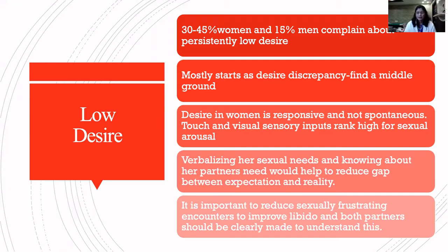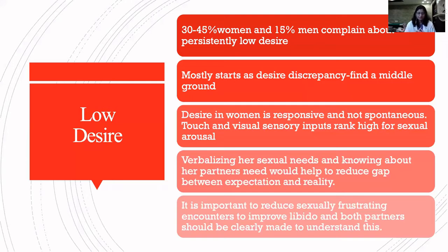The newer circular models have a very important component of previous sexual exposure. If your previous sexual encounter was a happy encounter with the same mate, you are more likely to indulge in a new sexual encounter with that mate. On the other hand, if your sexual encounter was bad — you had a lot of pain — you possibly would not want to have sex with that person. This is a very important finding for people who have dyspareunia. If they have pain once and are not able to have enjoyable sex, the inhibition will be even more next time. So it is important to reduce sexually frustrating encounters to improve libido, and both partners should be clearly told this.